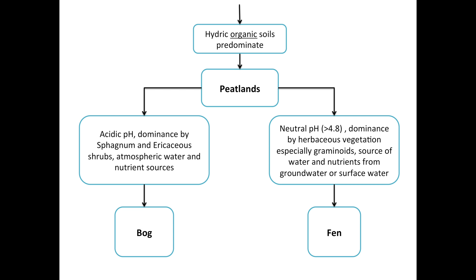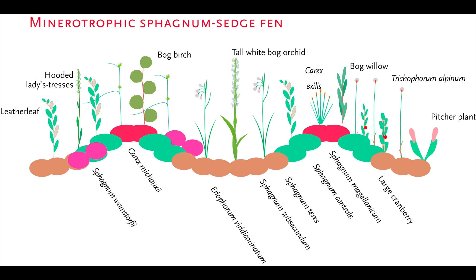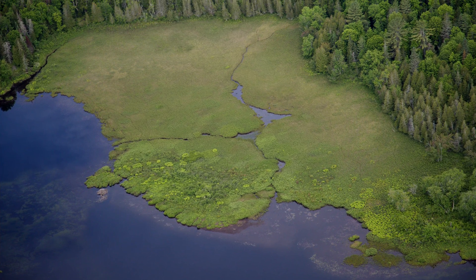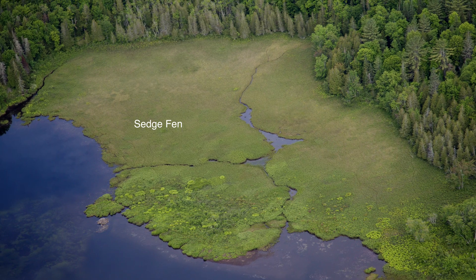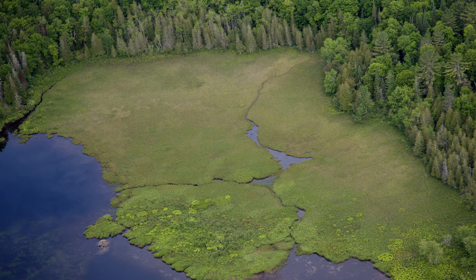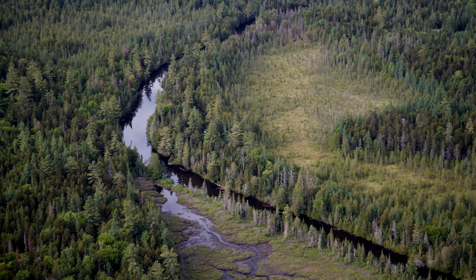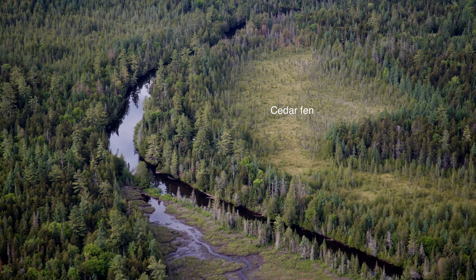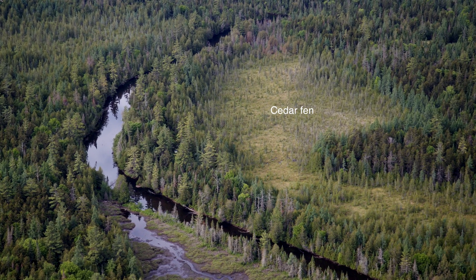Fens are peatlands that receive their water and nutrients primarily from groundwater and surface water, have a neutral pH greater than 4.8, and are often directly connected to upwelling groundwater and surface water sources. Fens are dominated by sedges and brown mosses such as swollen scorpion moss, stiff star moss, and ribbed bog moss. Trees such as northern white cedar also occur in fens. Fens often occur associated with streams and rivulets.